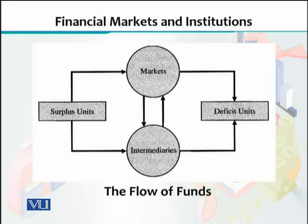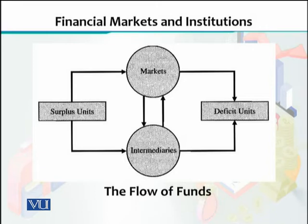In order to understand how the financial system operates, it is important to look at this particular flow of funds. On one side we have surplus units and on the other side deficit units. Surplus units - it can be a firm or a household - jiske paas apni zaroorat se zyada funds pade hue hain. Deficit units wo households ya firms hain jiske paas kam paise hain. To connect these two, we have financial markets at the top and financial intermediaries at the bottom of this flow.